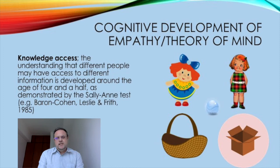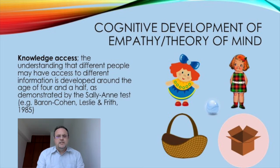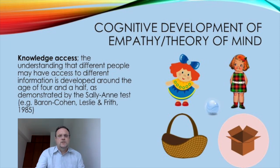Children's theory of mind and empathy develops through stages and progresses through childhood. There are many components of this phenomenon of theory of mind, and one of those aspects is called knowledge access — the ability to understand that people might have different information and therefore see things differently; they might have access to different information.